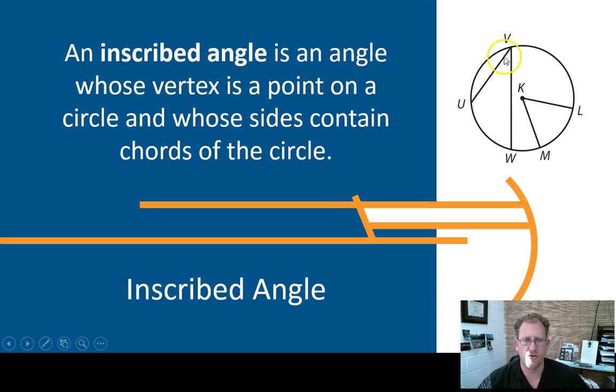So when you have a circle and you have an angle in it, and the angle has all three points of the angle that you need to describe the angle on the circle, that's an inscribed circle. Remember an inscribed polygon would have all of the vertices on the circle, and so this is an inscribed angle, it has the vertex on the circle's side.